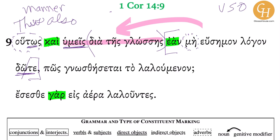Likewise, also you — through a language. If you do not give a clear word, how will what is being said be known? So I just translated the first part of verse nine. If you do not give — I single underline dote — dote and humeis are going together.